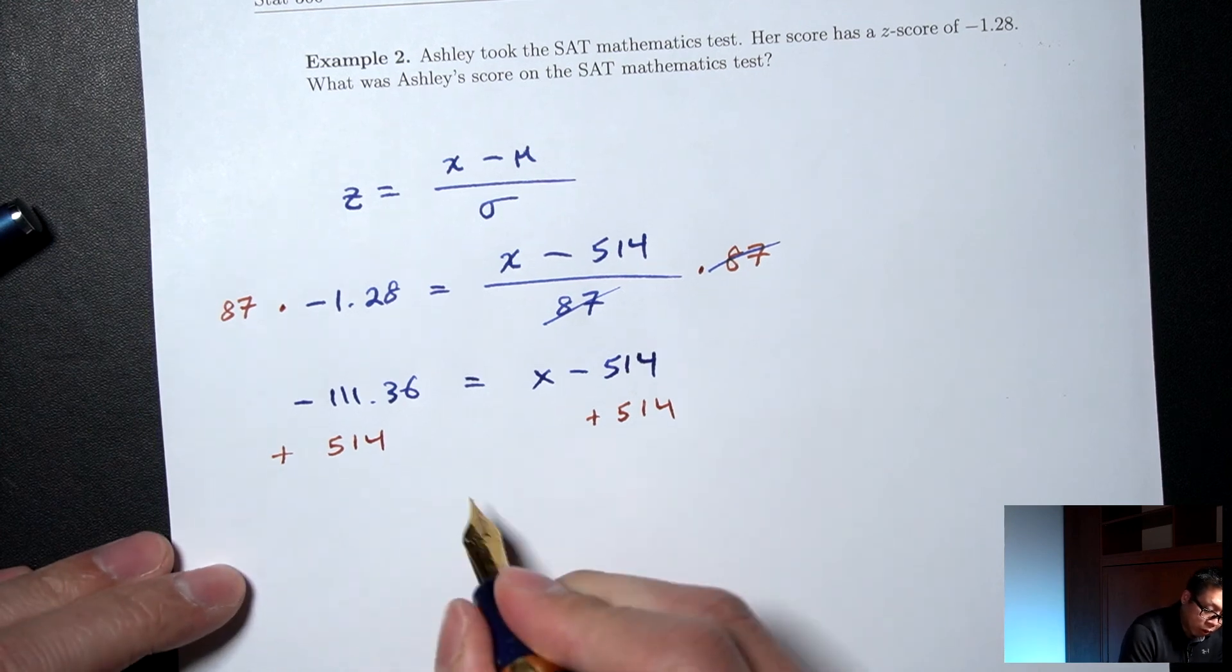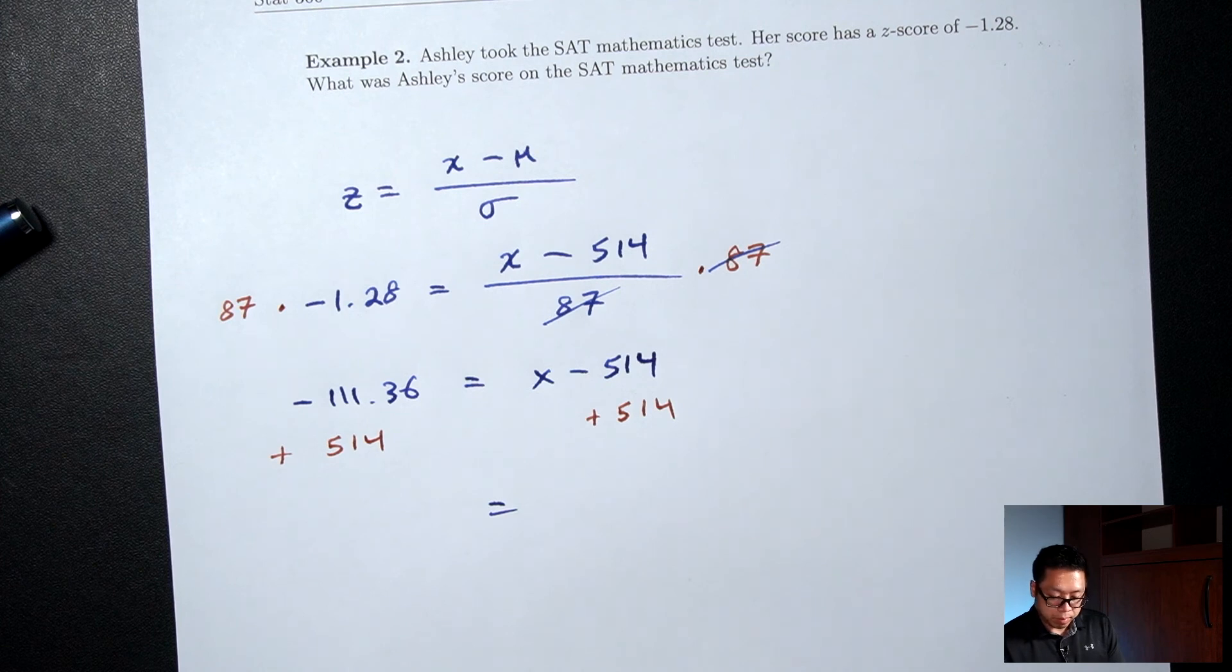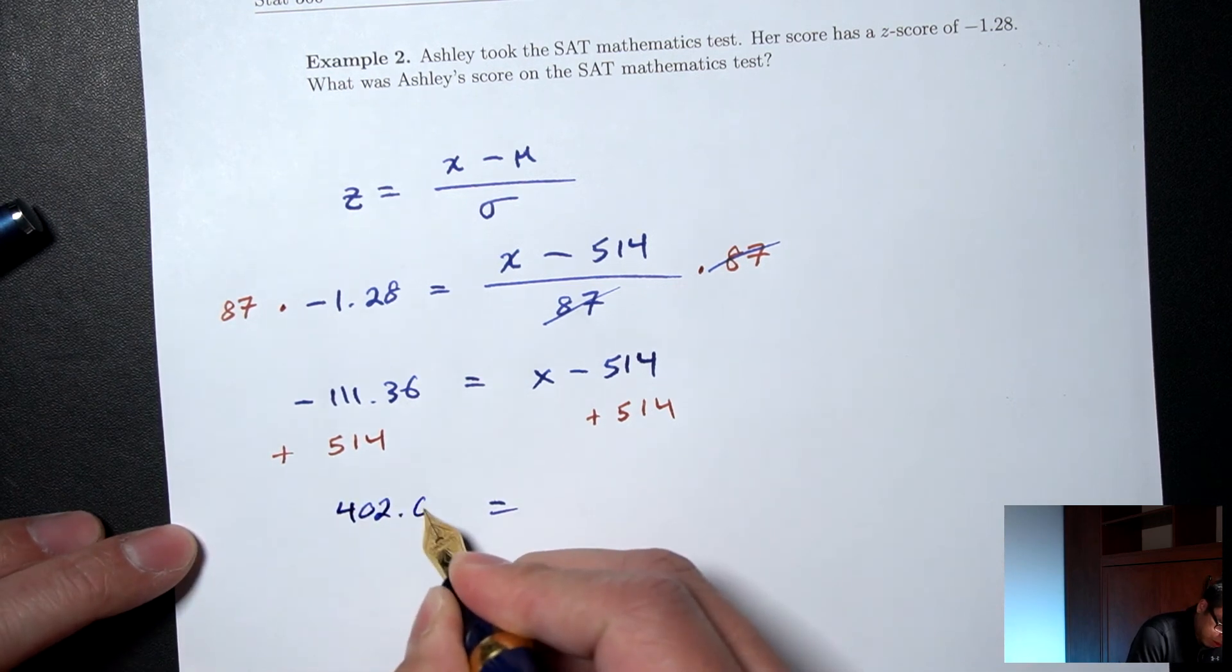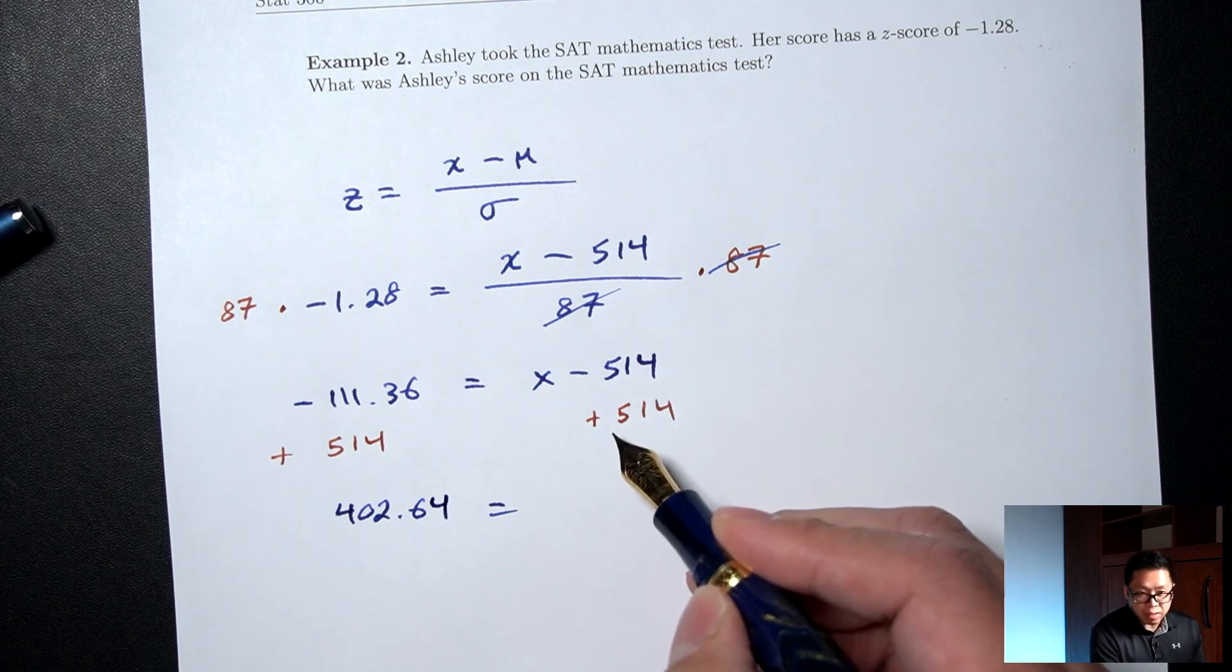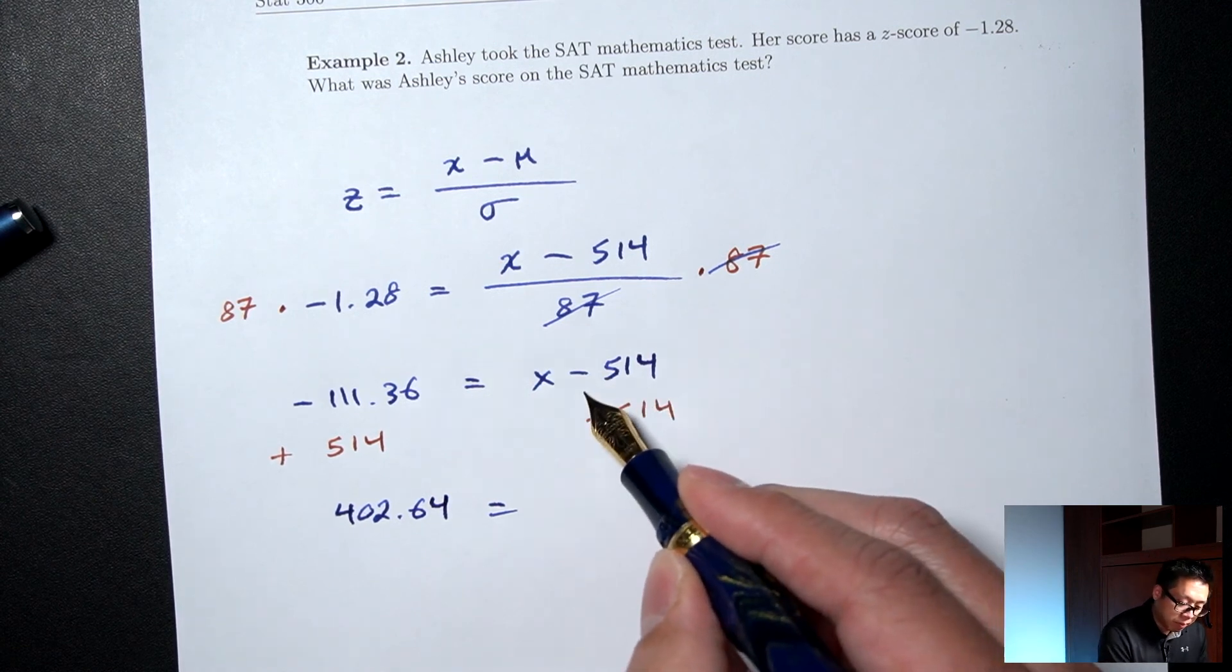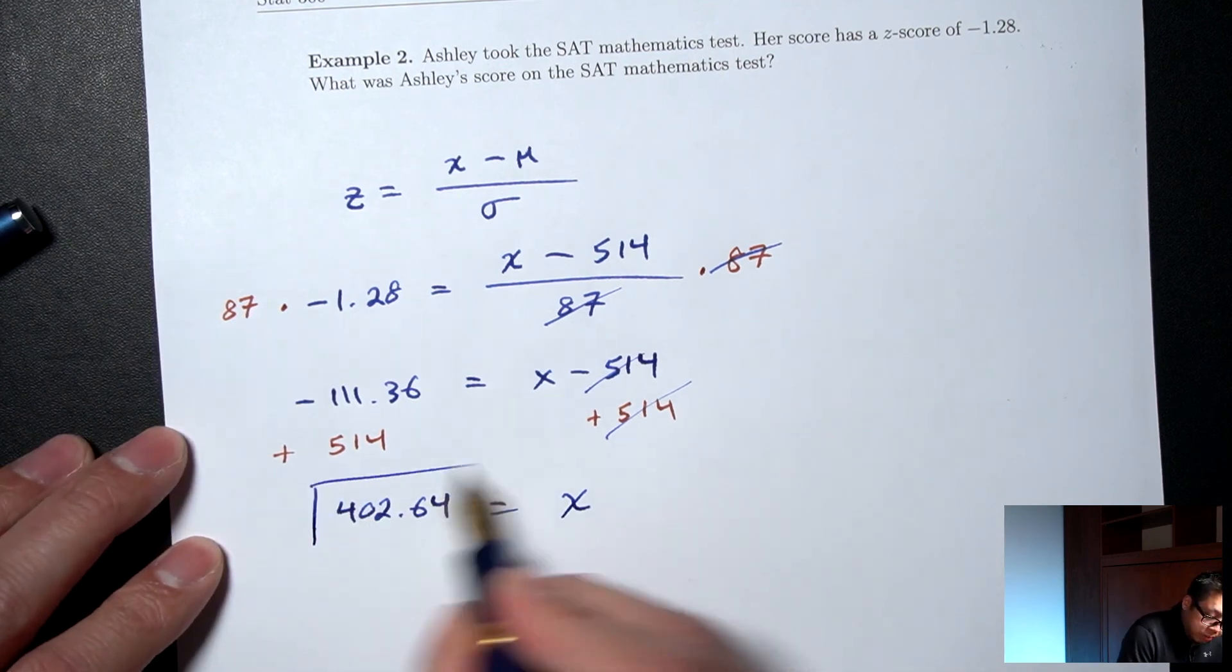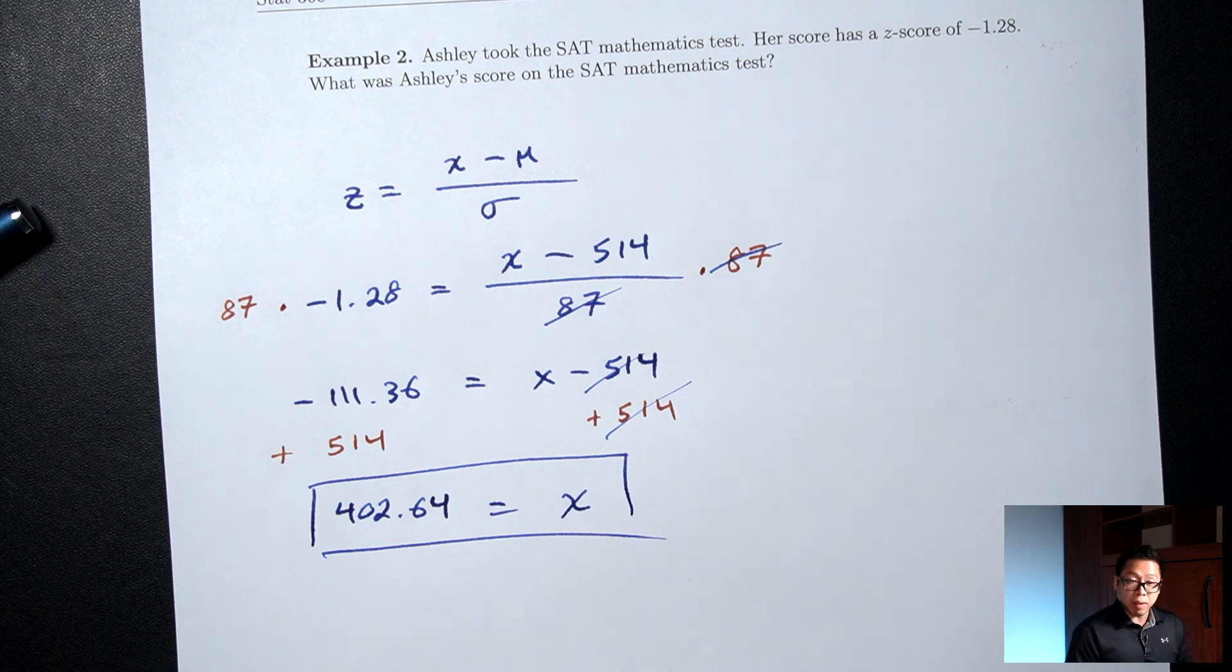On the left side, negative 111.36 plus 514. On the right side, subtracting 514, adding 514, that's going to cancel each other out. And we are left with just x, which is what we were looking for. So 402.64 was Ashley's SAT math score.